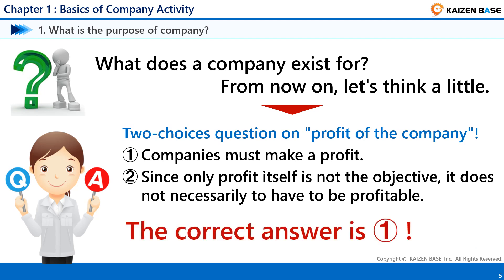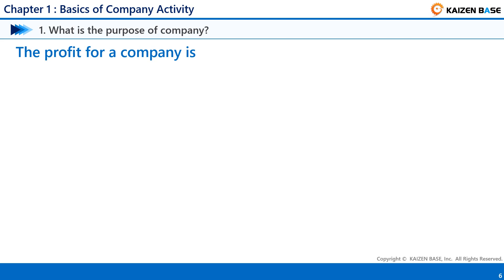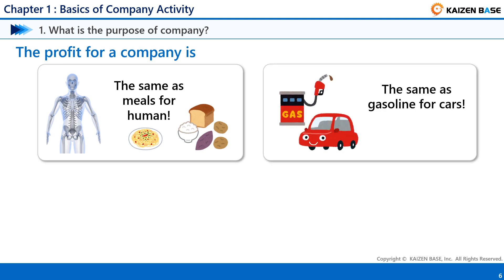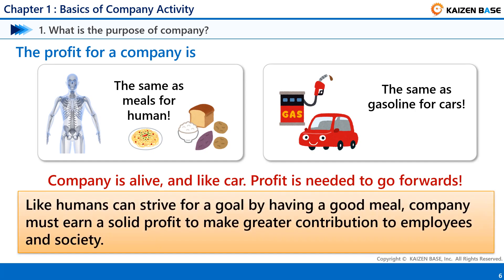The correct answer is 1. Why do you need a profit? The profit for a company is the same as meals for humans, the same as gasoline for cars. A company is alive, and like a car, profit is needed to go forward. Like humans who can strive for a goal by having a good meal, a company must earn a solid profit to make a greater contribution to employees and society.